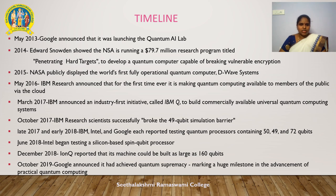In October 2017, IBM Research scientists broke the 49-qubit simulation barrier. In late 2017 and early 2018, IBM, Intel, and Google each reported testing quantum processors containing 15, 49, and 72 qubits respectively. In June 2018, Intel began testing a silicon-based spin-qubit processor. IBM Q reported that its machine could be built as large as 160 qubits. In October 2019, Google announced it had achieved quantum supremacy, making a huge milestone in artificial intelligence.